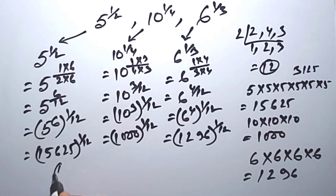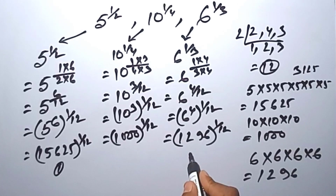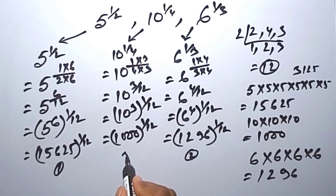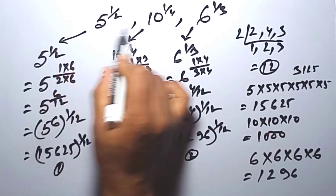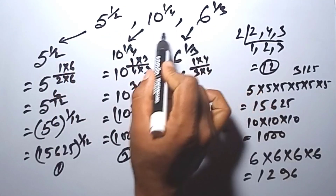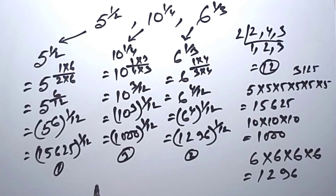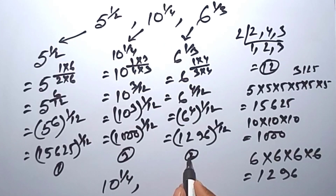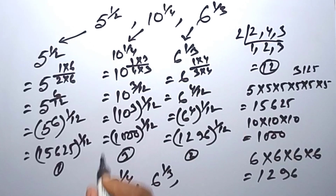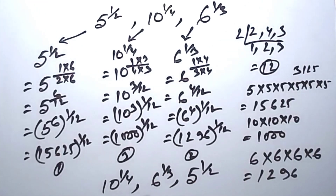So 15,625 is the biggest value, then after comes 1296, then the lowest value is 1000. So we arrange this in ascending order: the lowest value is 1000, then 1296, then 15,625. So we change this in ascending order.